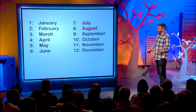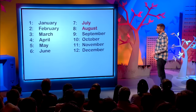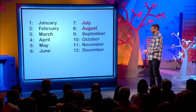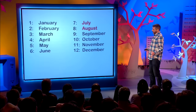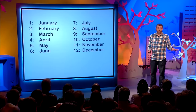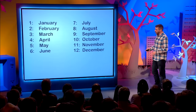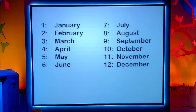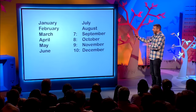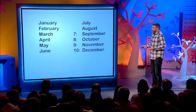They confused things by naming July and August, and then everything got moved around at a later date. So what we're going to do is correct this system. The first thing is to sort out the numbering — let's call them seven, eight, nine, ten, because that's what they are.